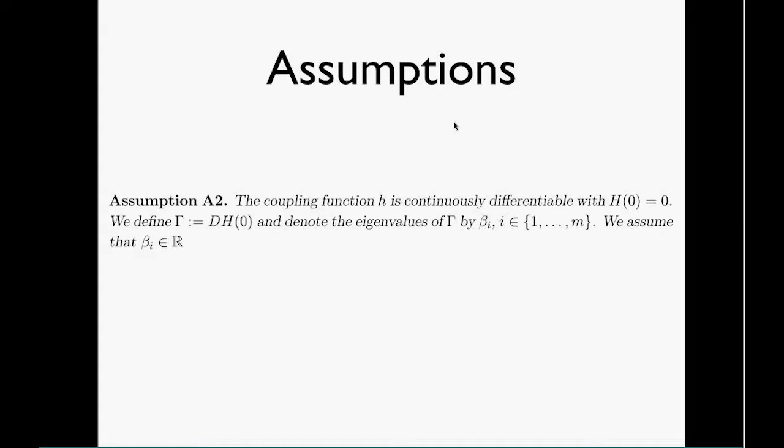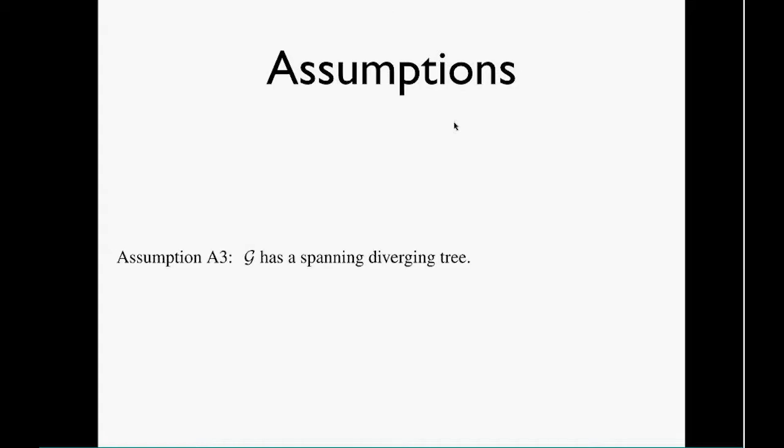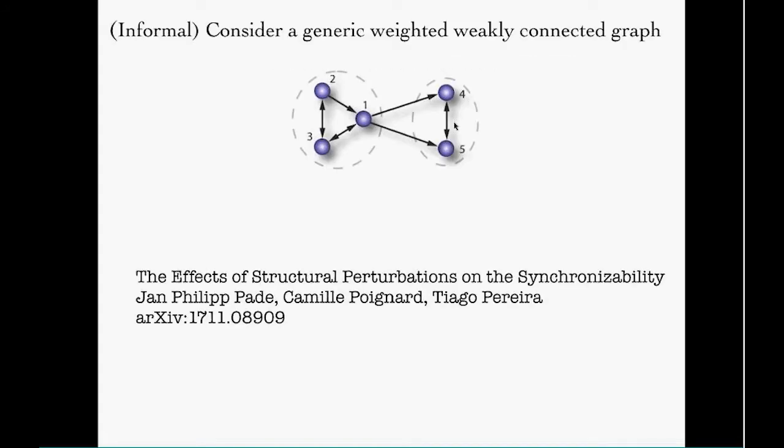The third assumption is on the graph. It's a very mild assumption saying that the graph has a diverging spanning tree. If the graph has not a diverging spanning tree, it makes no sense to set this problem because you could split the graph into two disjoint graphs.